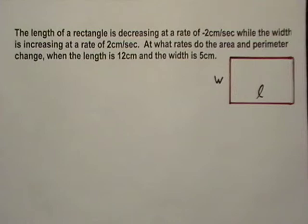It says the length of a rectangle is decreasing at negative two centimeters per second while the width is increasing at two centimeters per second. At what rates do the area and perimeter change when the length is 12 and the width is 5?